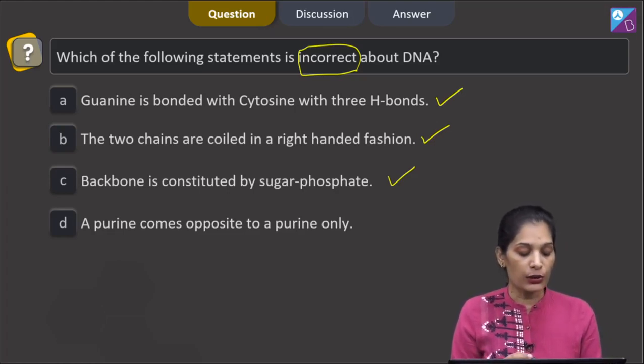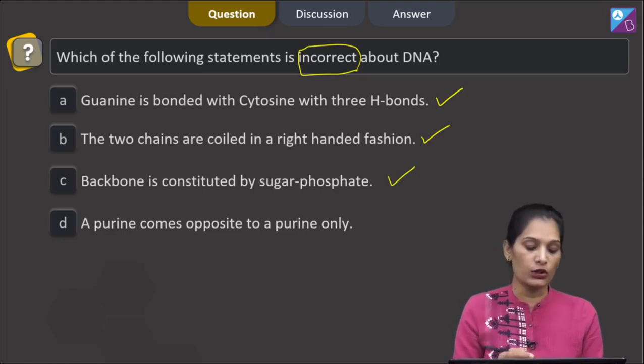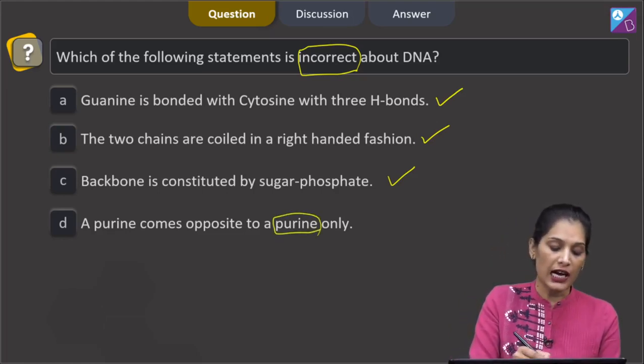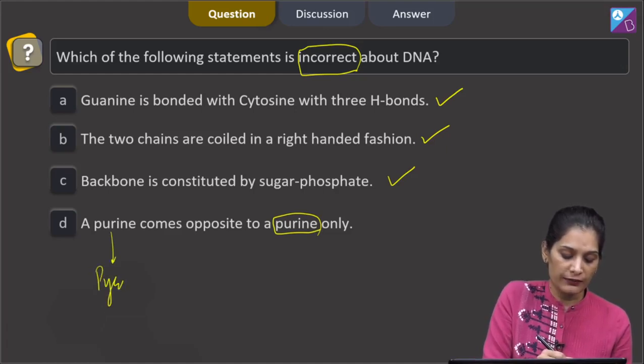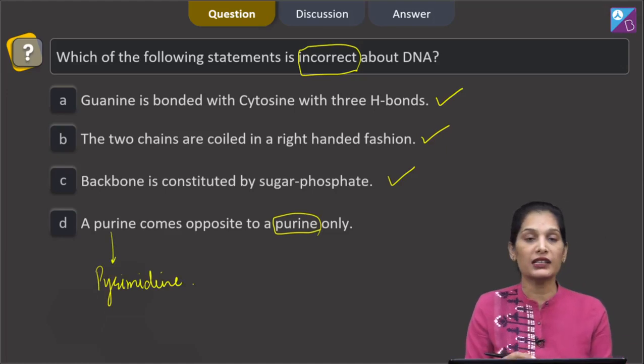D, a purine comes opposite to a purine only. No, this is not correct. A purine comes opposite to the pyrimidine. That is why they maintain the structure of the DNA.